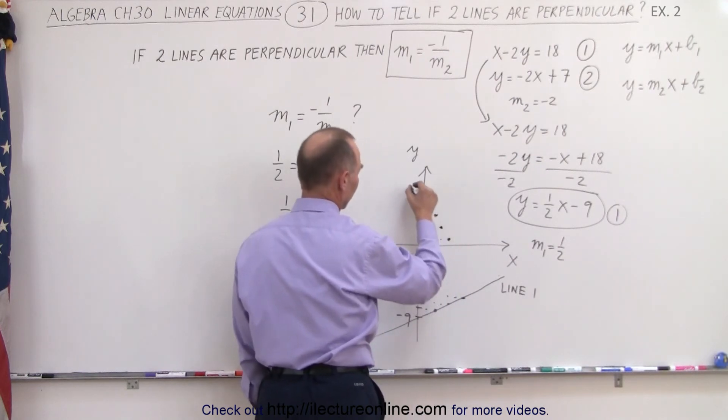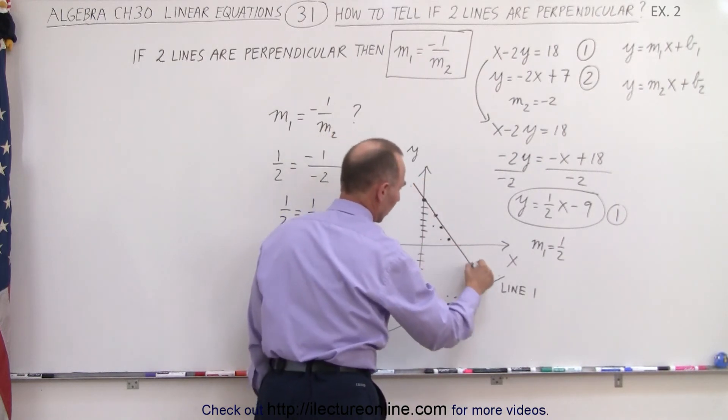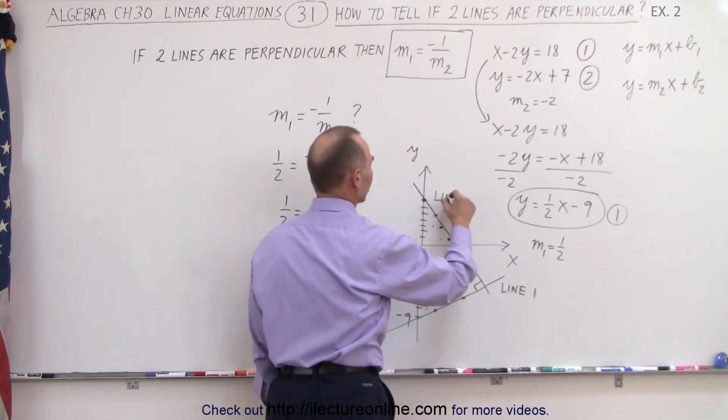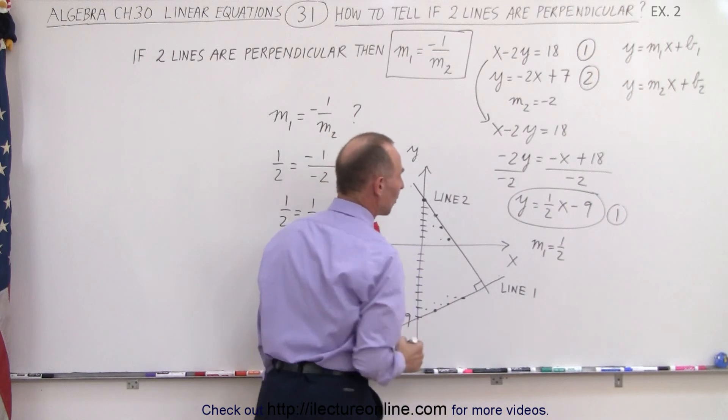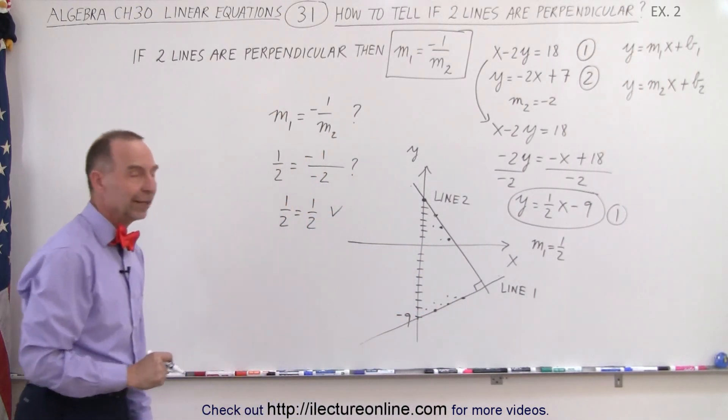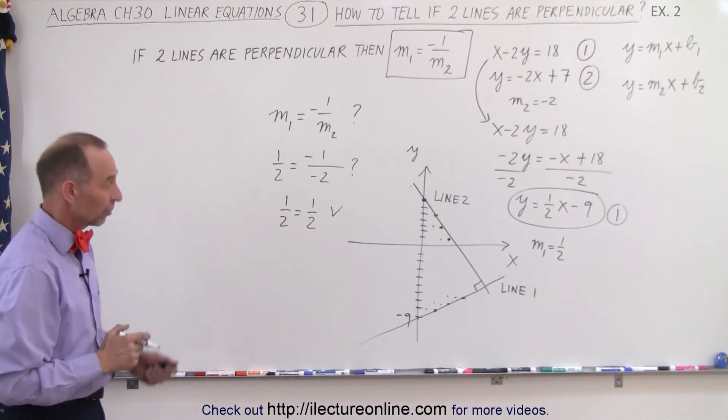So you can see that if we connect these dots right here, and sure enough, that looks pretty close to being perpendicular. There's line 2, and that's how we can tell visually and using the equation that the two lines are indeed perpendicular to one another.